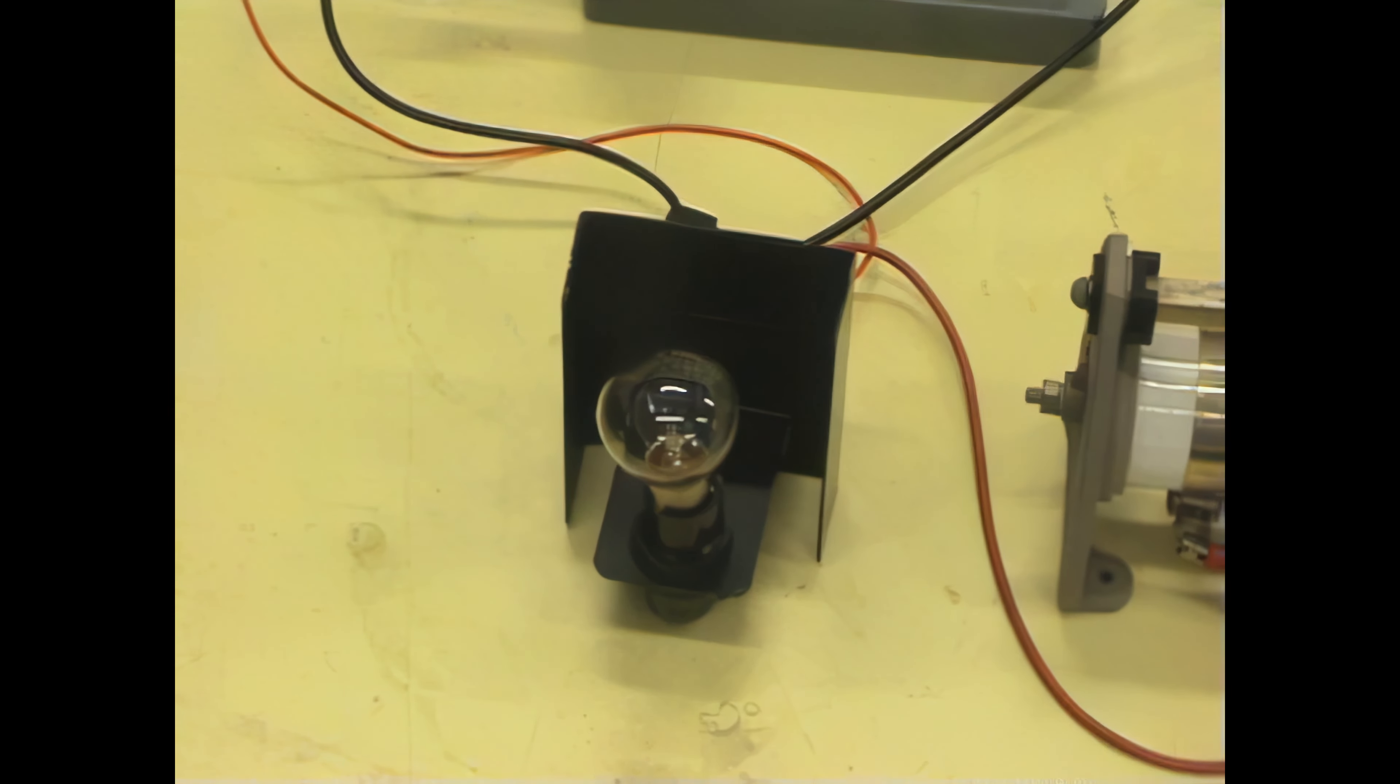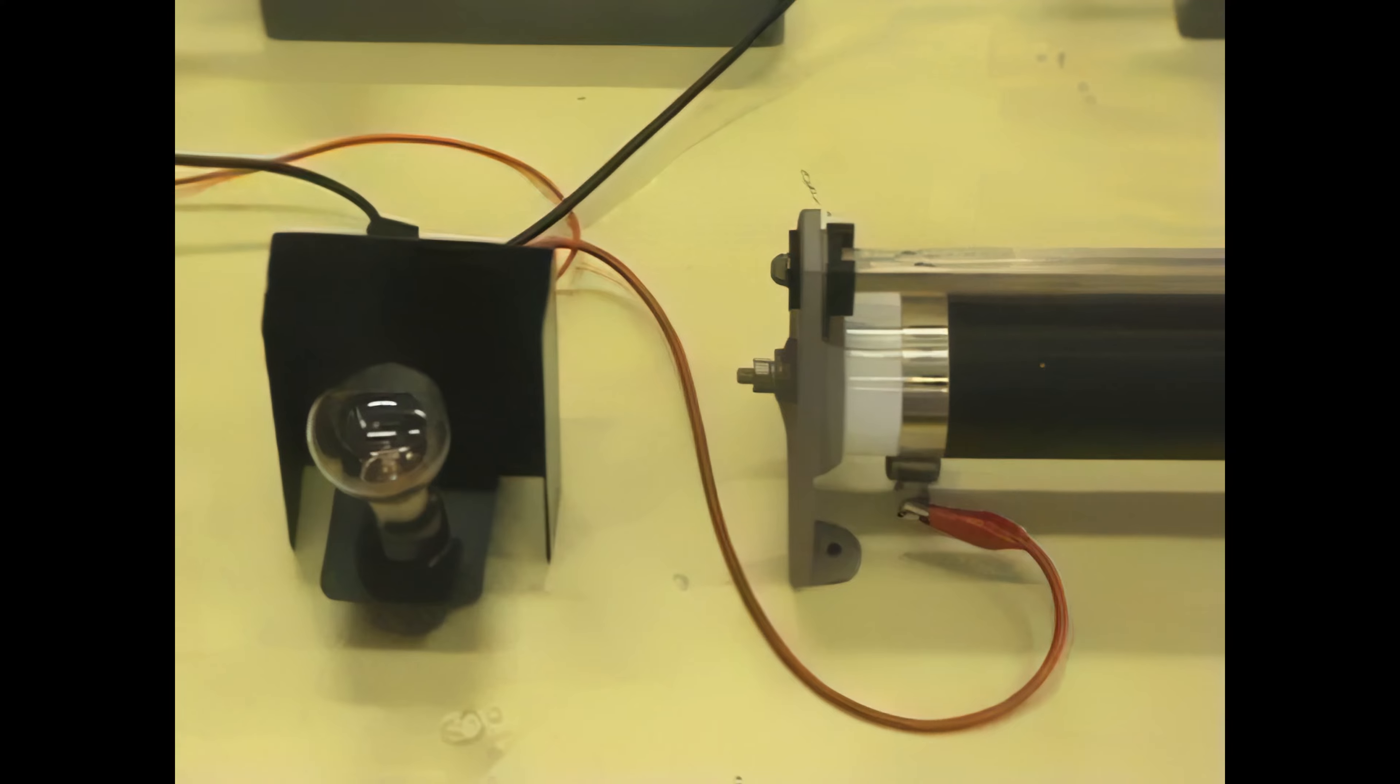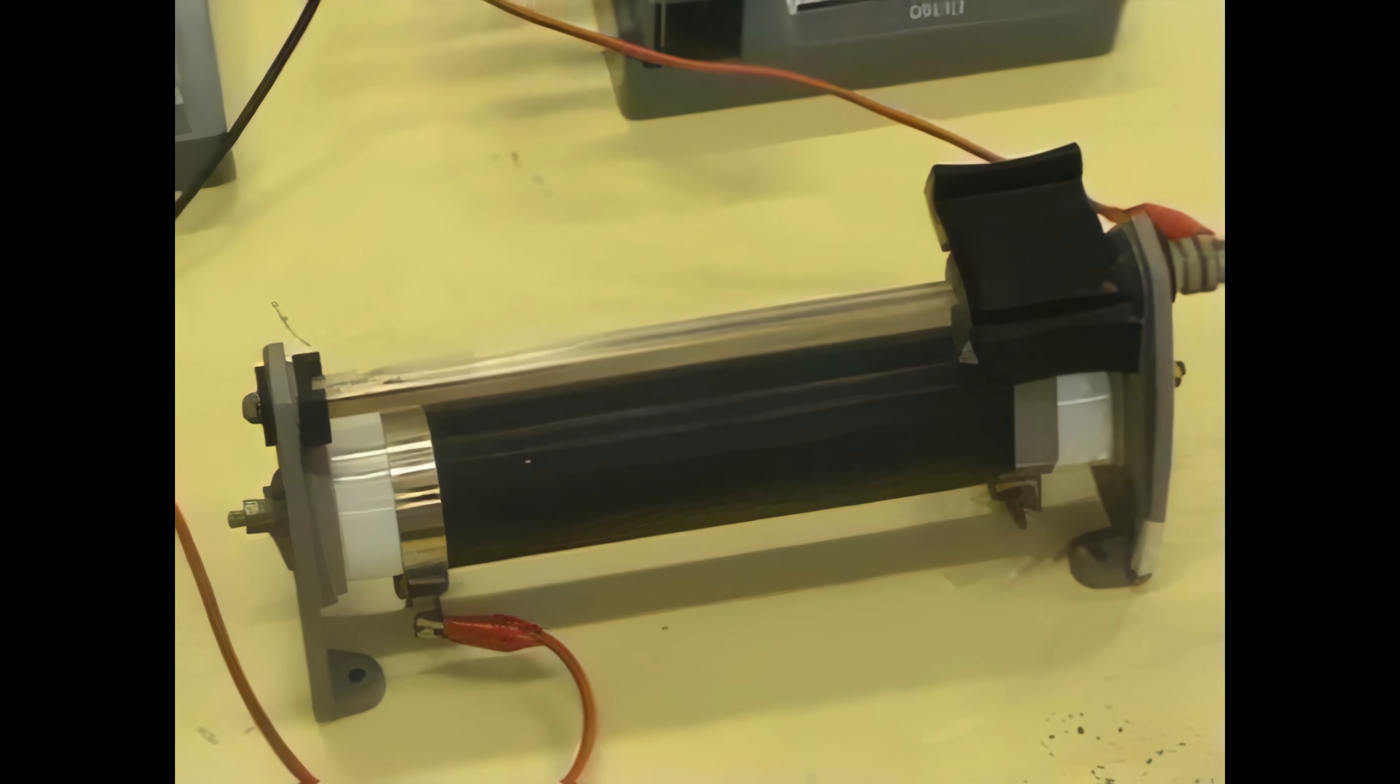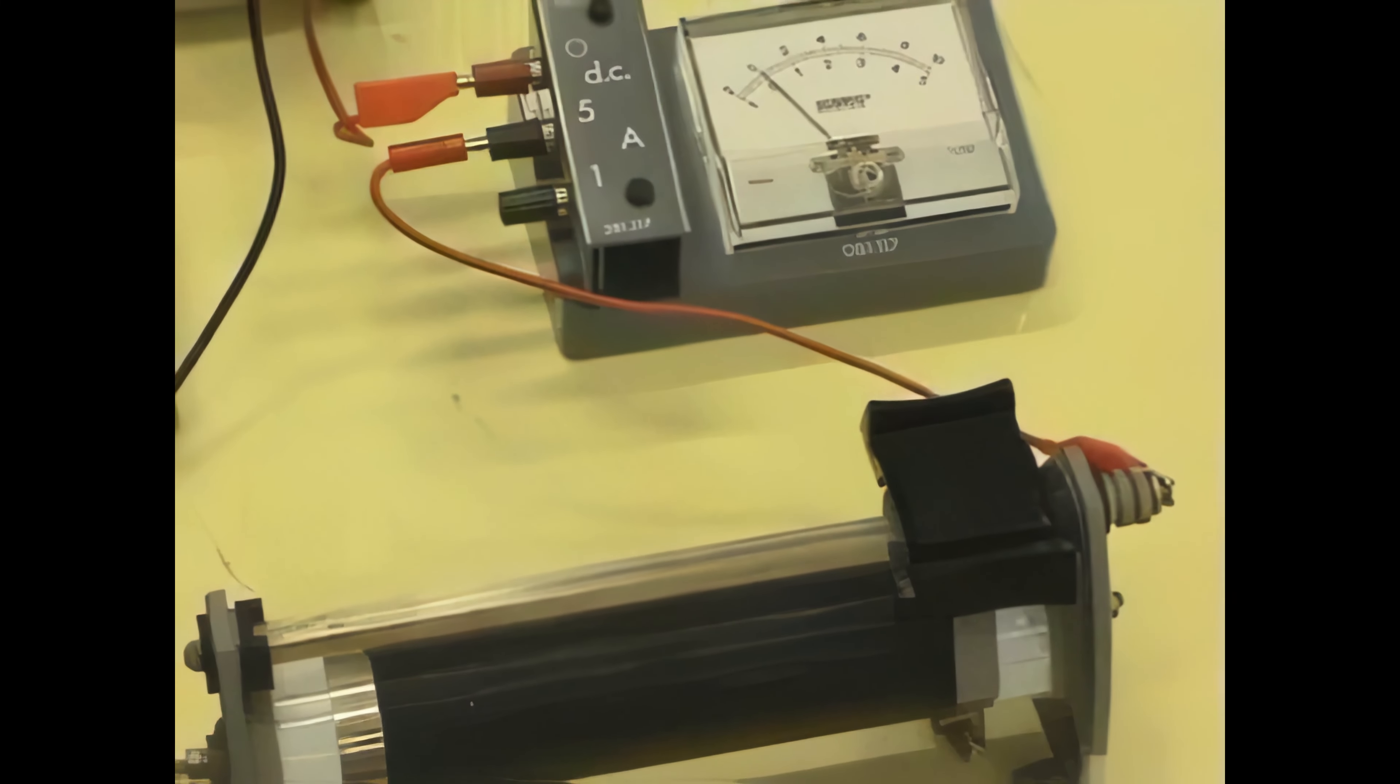The setup consists of a ray box lamp connected to a DC power supply via a rheostat and an ammeter.